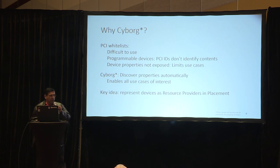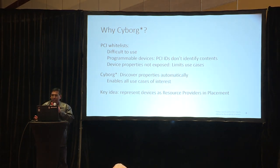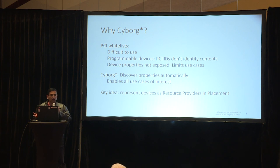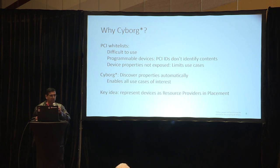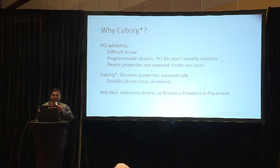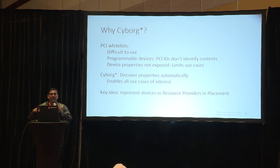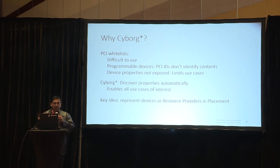So why do we need Cyborg in the first place? If you are looking at GPUs today, we typically use PCI whitelists, and they're typically difficult to use — basically it's a configuration file you need to keep updating. When it comes to programmable devices, it won't even work anymore, because you could have an FPGA with a certain PCI ID with a GZIP function inside it, and another FPGA with a VRAN workload inside it. Looking at the PCI ID doesn't tell you what's inside it, so you can't ask for a VM with a GZIP offload or a VRAN offload. With programmable components, you can't even use PCI IDs anymore.